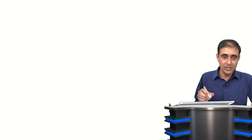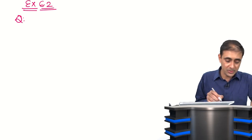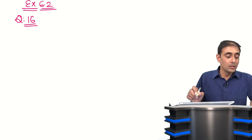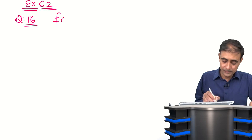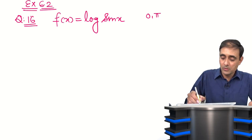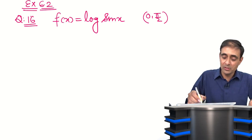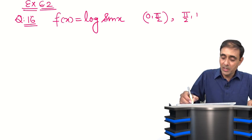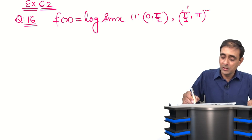Let us do question number 16 from exercise 6.2. We have to prove that the function f given by f(x) = log(sin x) is strictly increasing on the open interval (0, π/2) and strictly decreasing on the interval (π/2, π). So on the first interval we have to prove increasing, and on the second interval we have to prove decreasing.